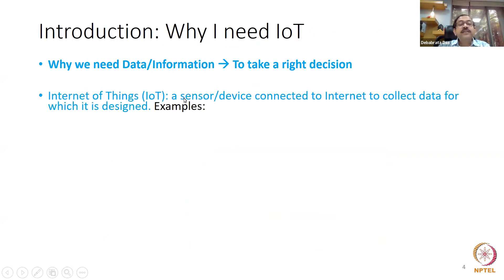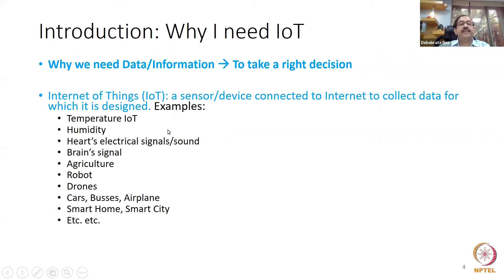So, Internet of Things: a sensor device connected to the internet to collect data for the purpose it is designed. Every sensor or IoT device is designed for a particular function. Here is a long list of functions: temperature measurement IoT is different from humidity measurement IoT, electrical signals, sounds, heartbeats, and brain signals — all different.